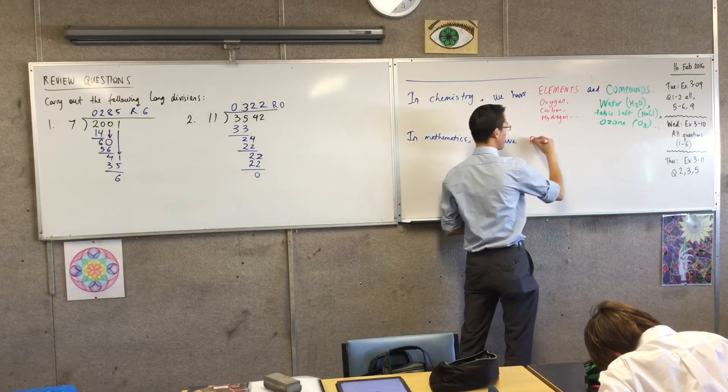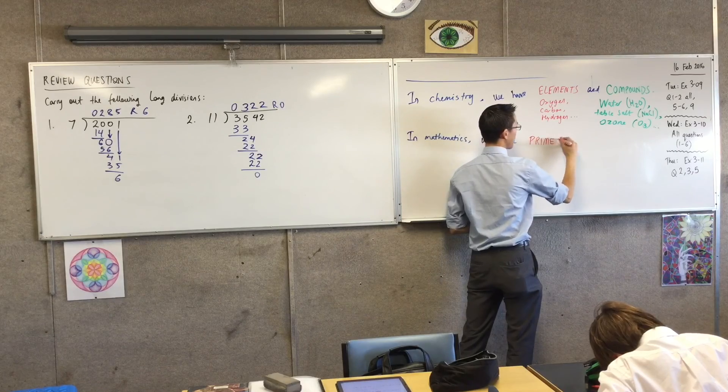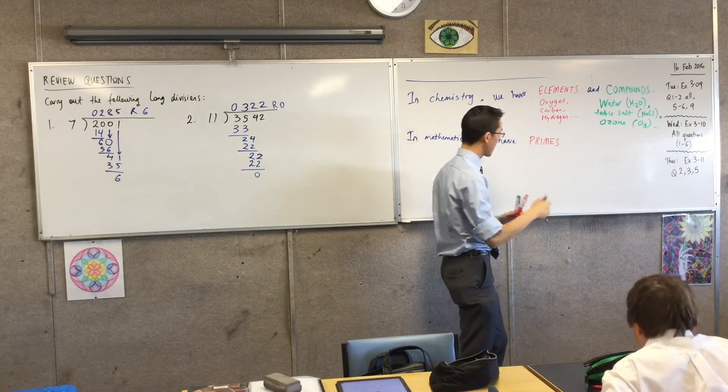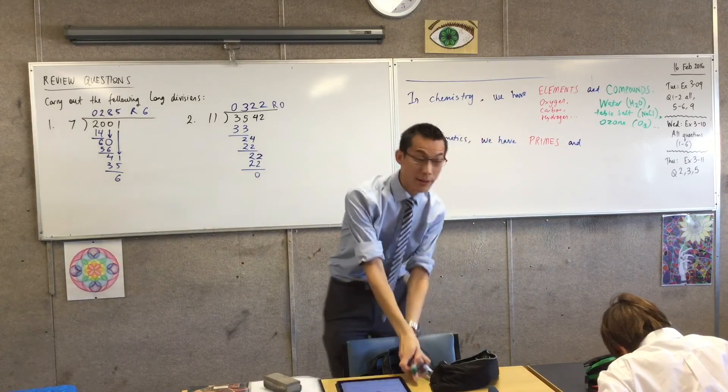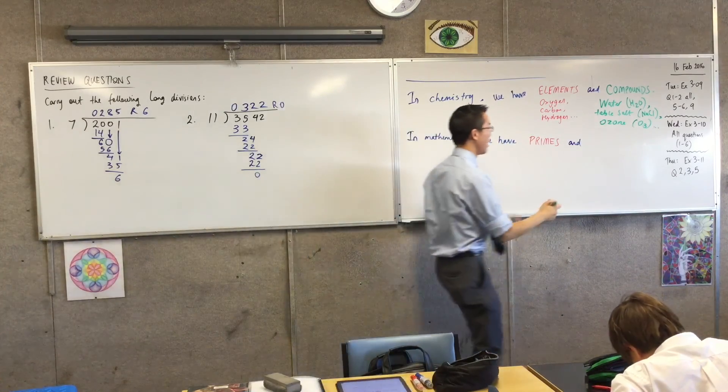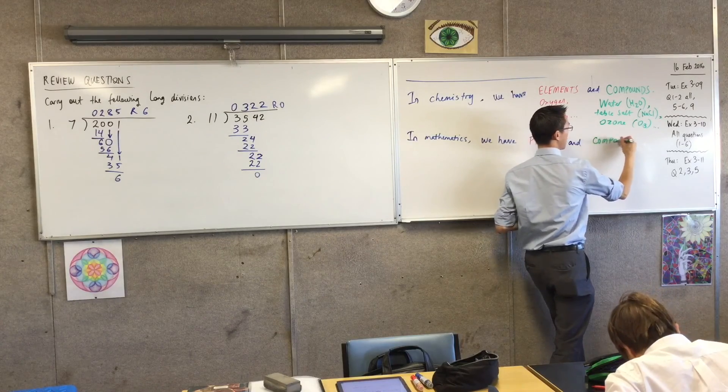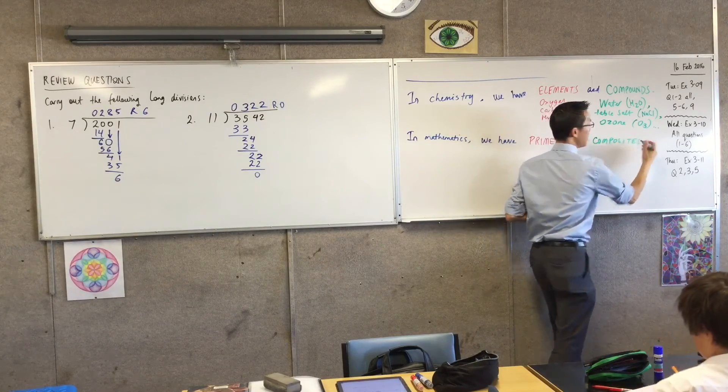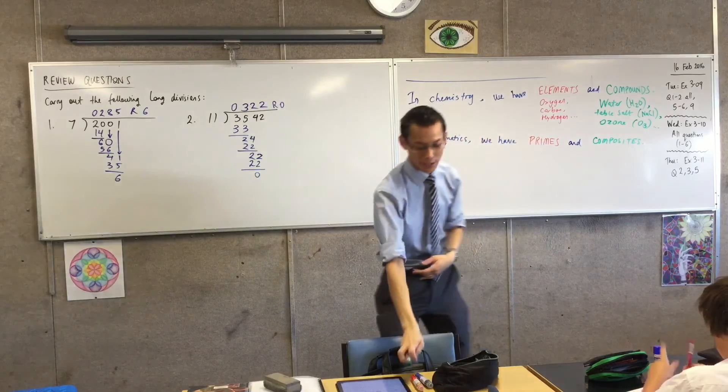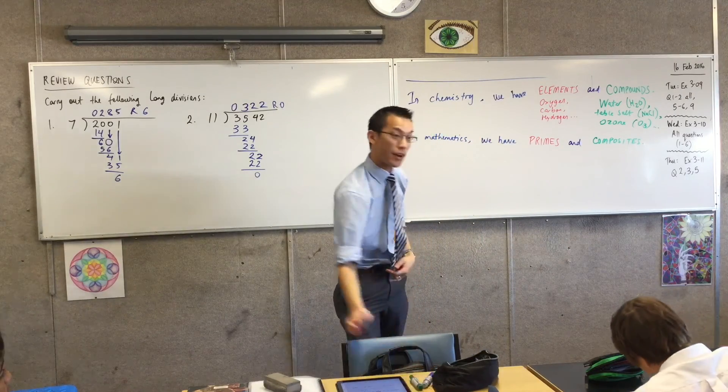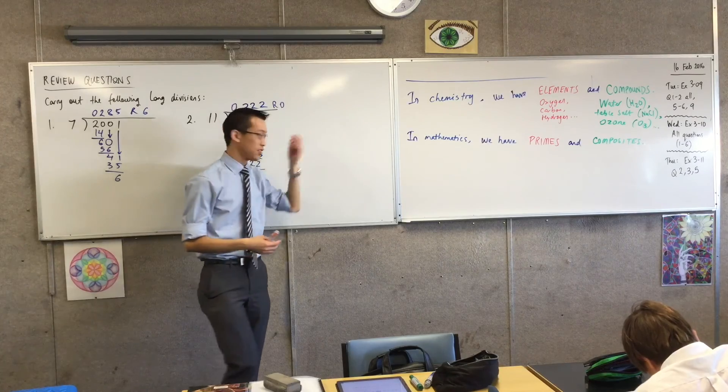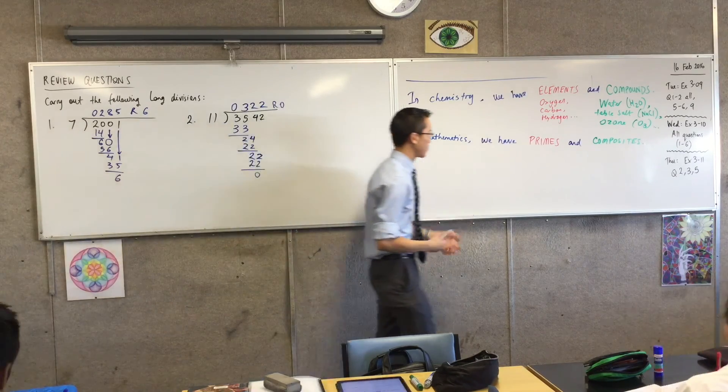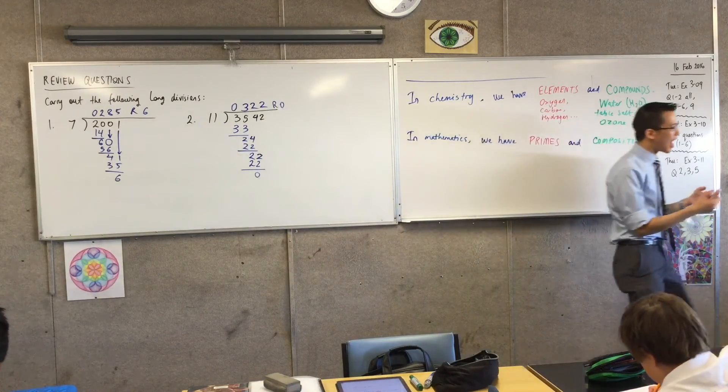And we talk about, just like stuff, we talk about two categories of numbers. And here are the two categories. I need my two colours again. The two categories are called primes. And this name sounds very similar to the name we just wrote down. If they're not primes, they're called composites. Now, I'm drawing this parallel, and I'm even showing it in the colours, for a very good reason.